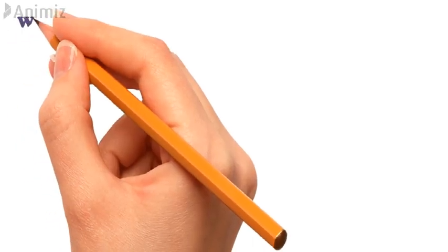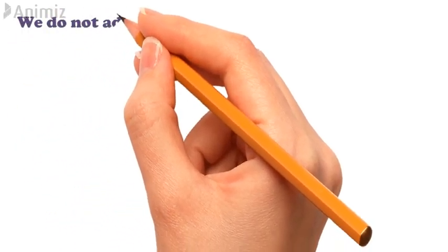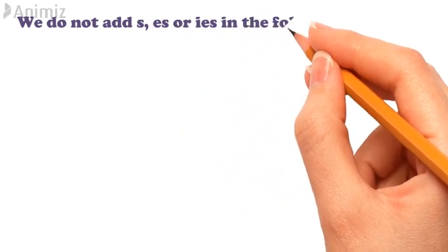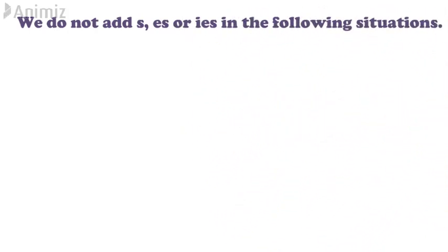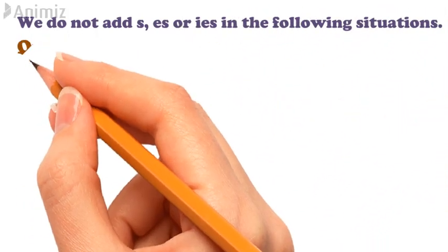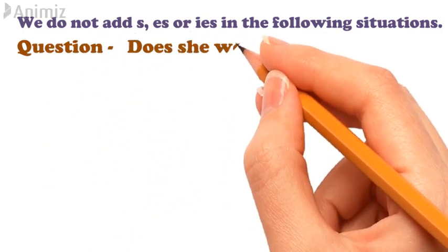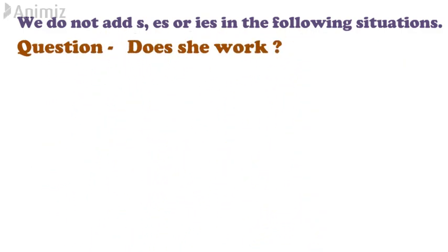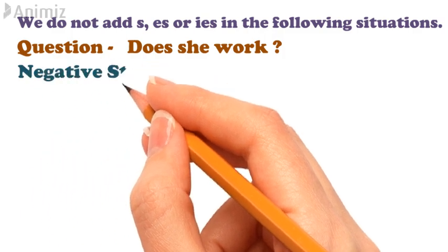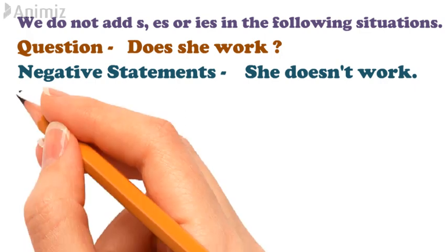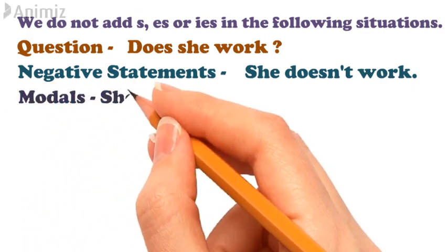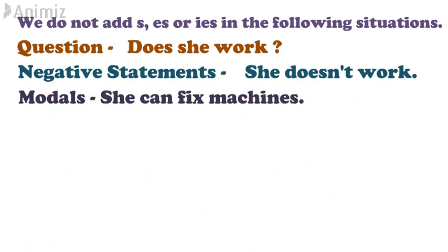Remember that we do not add S, ES, or IES in the following three situations. First, with questions — for example: does she work? Second, with negative statements — for example: she doesn't work. And thirdly, with helping verbs or modals — for example: she can fix machines.